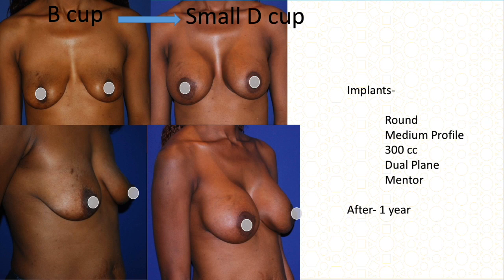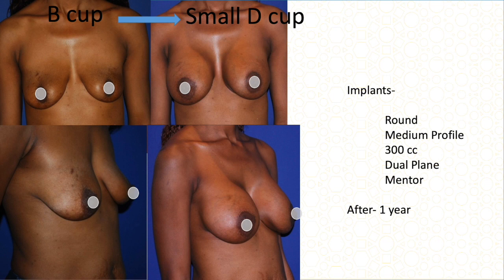Another patient was B cup but had been D cup before pregnancy and childbirth, losing a lot of volume. Although she needed a lift, we decided to do only an implant because a lift would cause significant scarring that may not look nice. We agreed to correct it with the implant — a 300 cc dual-plane medium-profile implant to give fullness and some lift. This was after one year and she maintained it well.